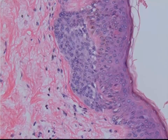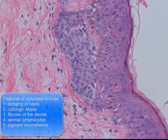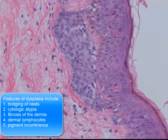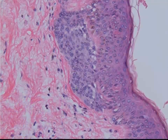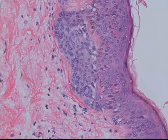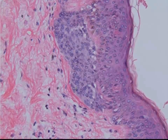Bridging is a sign of dysplasia. This is a case of mild dysplasia, but dysplasia nonetheless. So this is an example of one end of the spectrum — the benign end — a mildly dysplastic nevus.